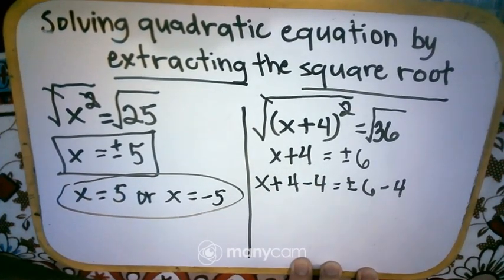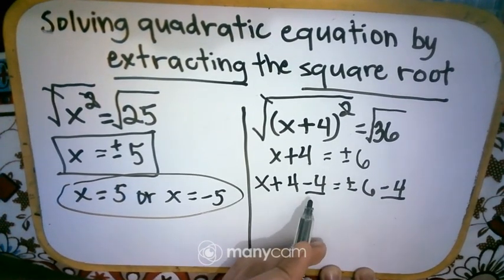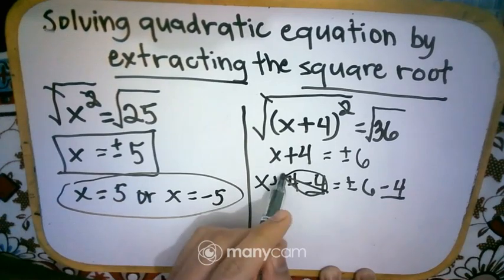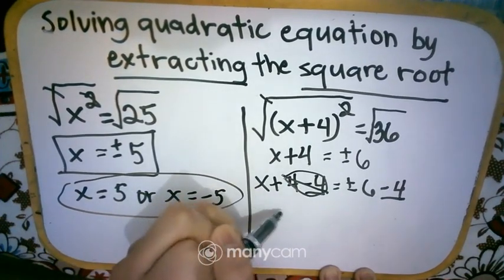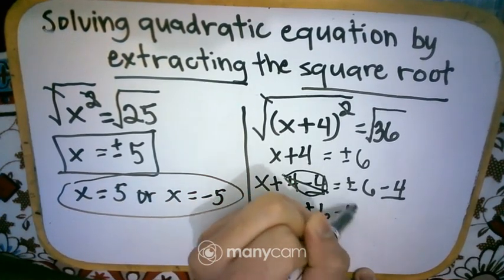So x plus 4 minus 4 is equal to positive negative 6 minus 4. So do it to the left, do it to the right. So we minus 4 on the left, minus 4 on the right side. And then we can cancel this.